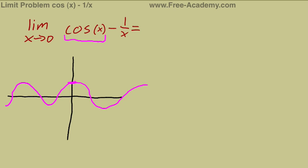And then your other function here is minus 1 over x. 1 over x is a hyperbola, and because it's negative, you've got to flip it. So it will look something along those lines.